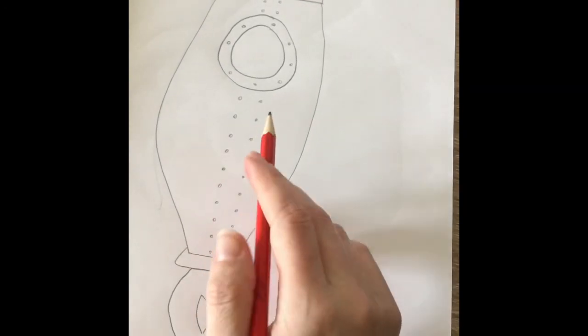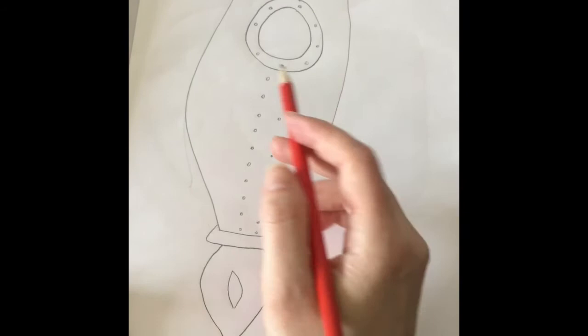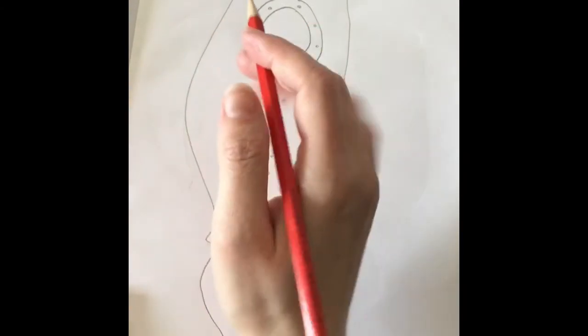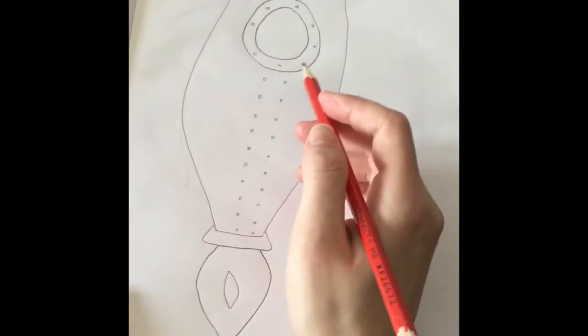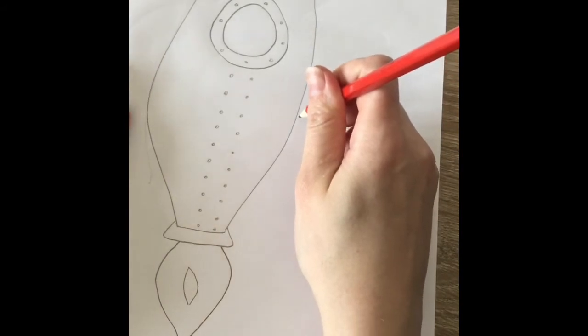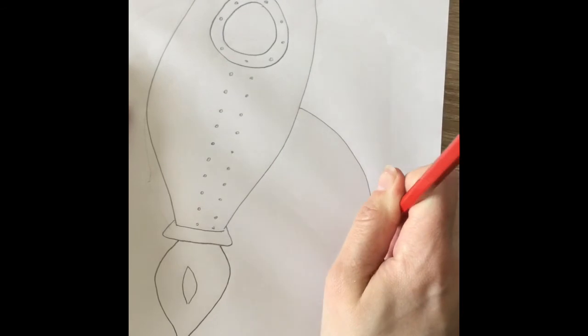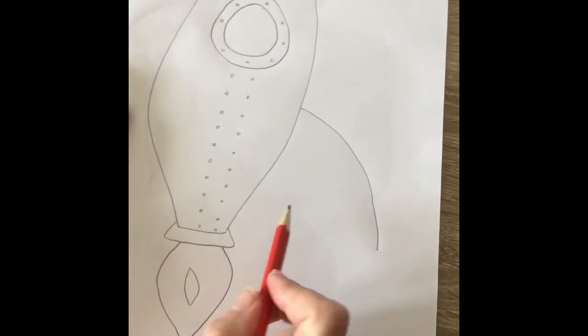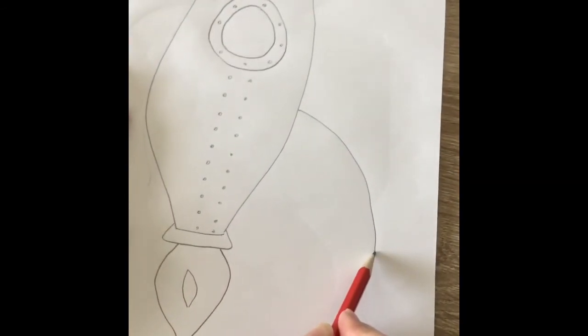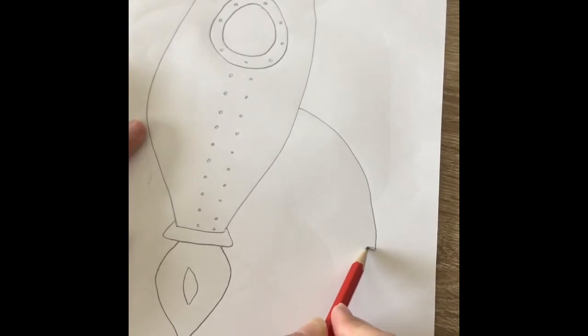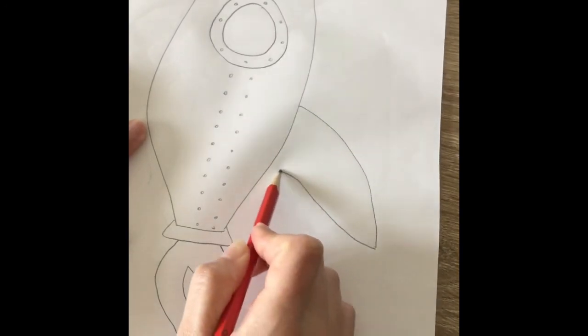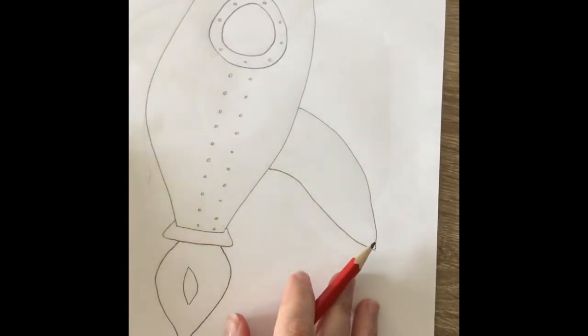Now what I'm going to need are the wings to our rocket ship. So I'm going to draw it on this side first. I'm going to come about halfway through. I'm going to come out like that, like an arc, and then I'm going to come back like that to make my rocket ship wing.